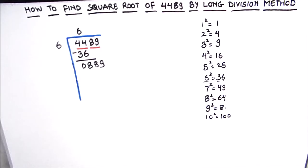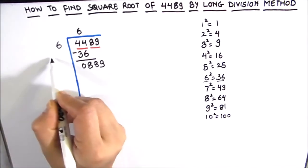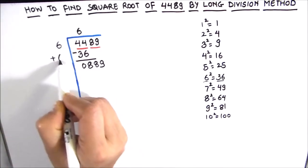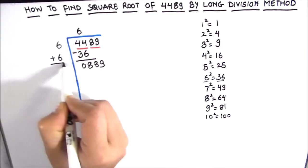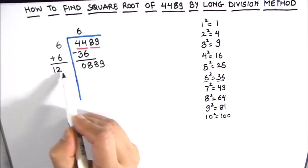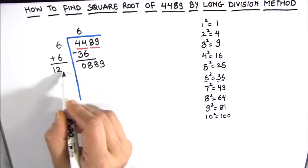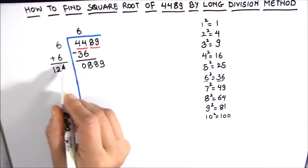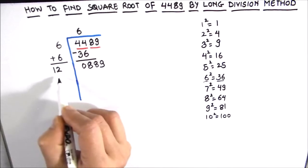Now to find the new divisor, we need to add the same number 6 to the divisor, so we got 12. And we are going to annex some other number here. That digit which we are going to annex or add here is chosen in such a way that the product of the new divisor with the digit gives the result which is equal to 889 or just less than 889.